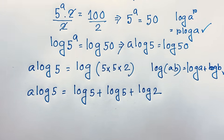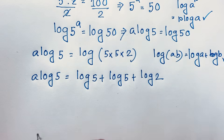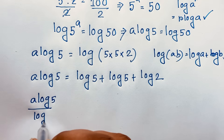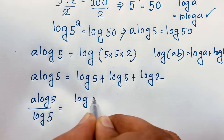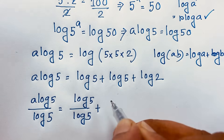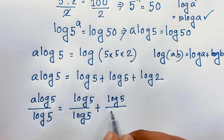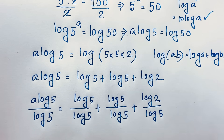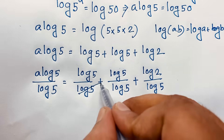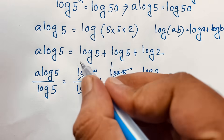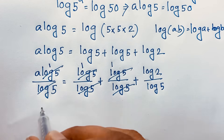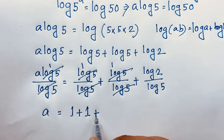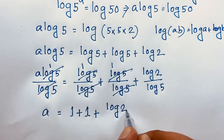Now at this moment I divide both sides by log 5. So I can see: A log 5 divided by log 5, here is log 5 over log 5, plus log 5 over log 5, plus log 2 over log 5. You can see this cancels out, this cancels out — it is 1, this is 1. This also cancels out to 1. So 1 times A will be A, and 1 plus 1 here, plus log 2 over log 5.